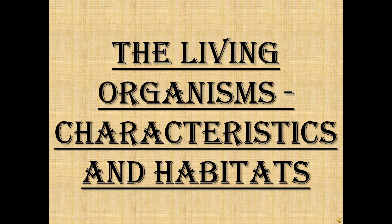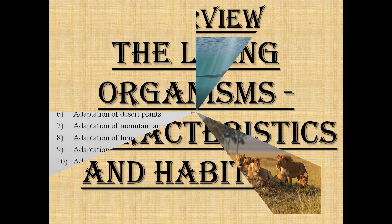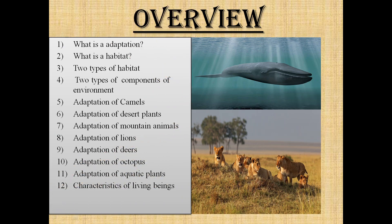This is a PowerPoint presentation on living organisms' characteristics and habitats. This presentation contains information about: what is adaptation, what is a habitat, two types of habitat, two types of components of environment, adaptation of camels, adaptation of desert plants, adaptation of mountain animals, adaptation of lions, adaptation of deers, adaptation of octopus, adaptation of aquatic plants, and characteristics of living beings.